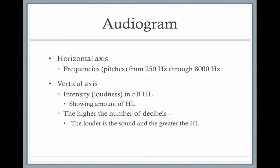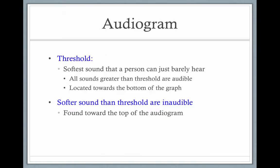On the horizontal axis of the audiogram, we have frequency or pitch from low to high frequency — 250 Hz to 8,000 Hz — the sounds most important for our range of hearing. Even though we can hear from 20 Hz to 20,000 Hz, it's really 250 to 8,000 Hz where everything we need to hear is. On the vertical axis, you have intensity or loudness measured in dB HL. The higher the number of decibels, the louder the sound needs to be for the child to hear it — the worse the hearing loss.